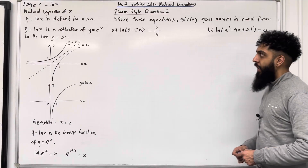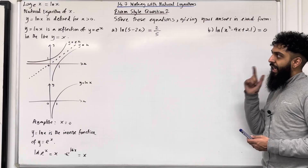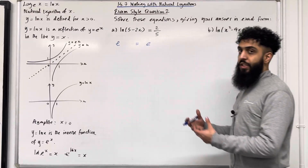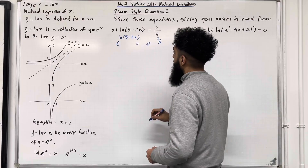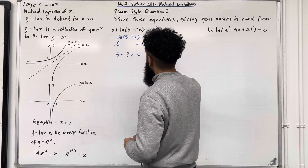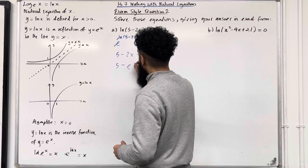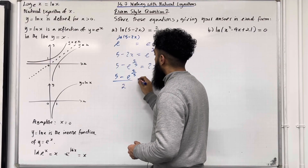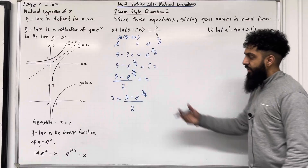Moving on to exam style question 2: solve these equations giving your answer in exact form. Part a: ln(5 - 2x) = 2/5. We need to first get rid of the ln by applying e on both sides: e^(ln(5-2x)) = e^(2/5). Since e and ln are inverses they cancel out, reducing the equation to 5 - 2x = e^(2/5). Rearranging: x = (5 - e^(2/5)) / 2.